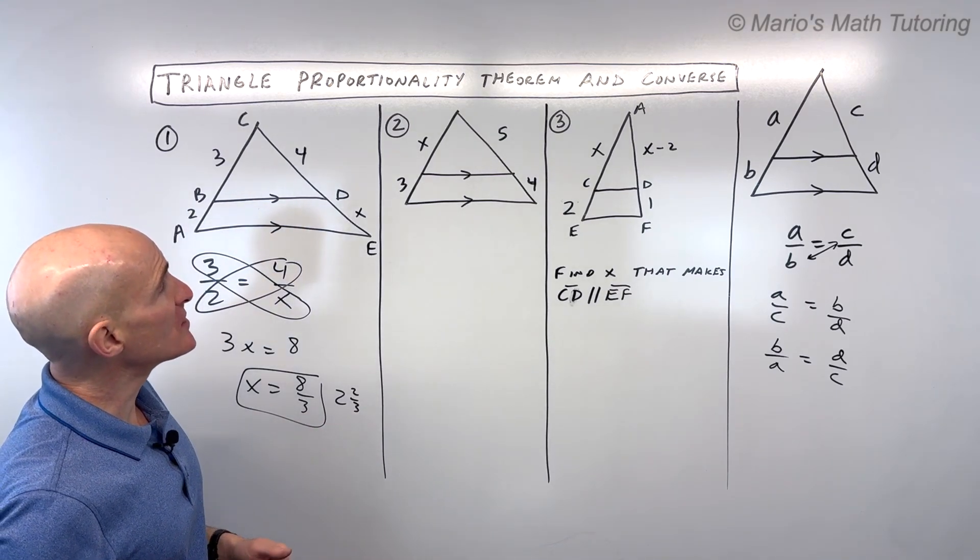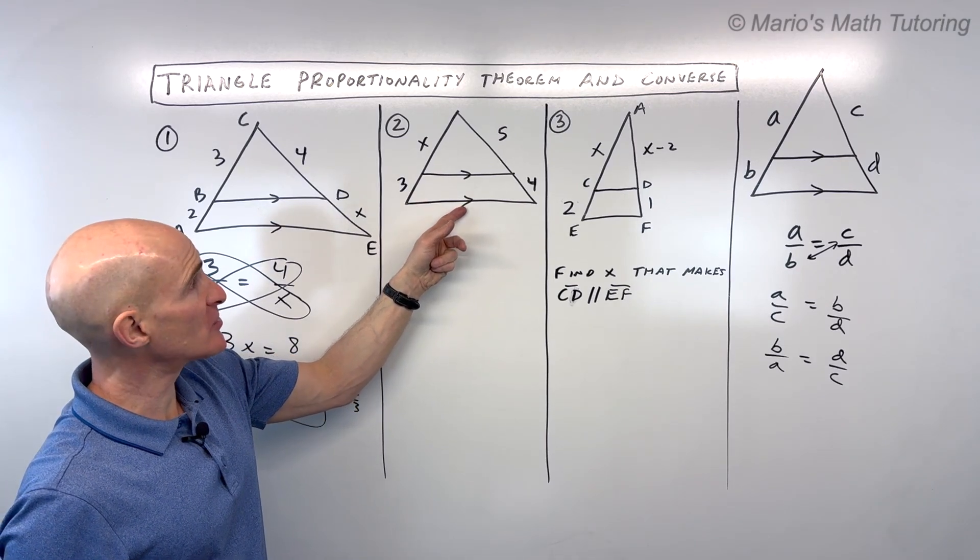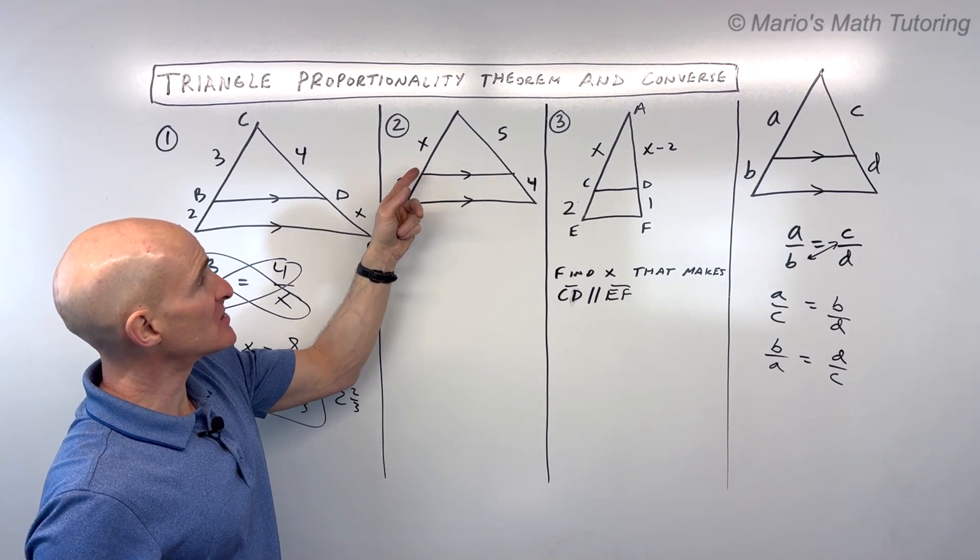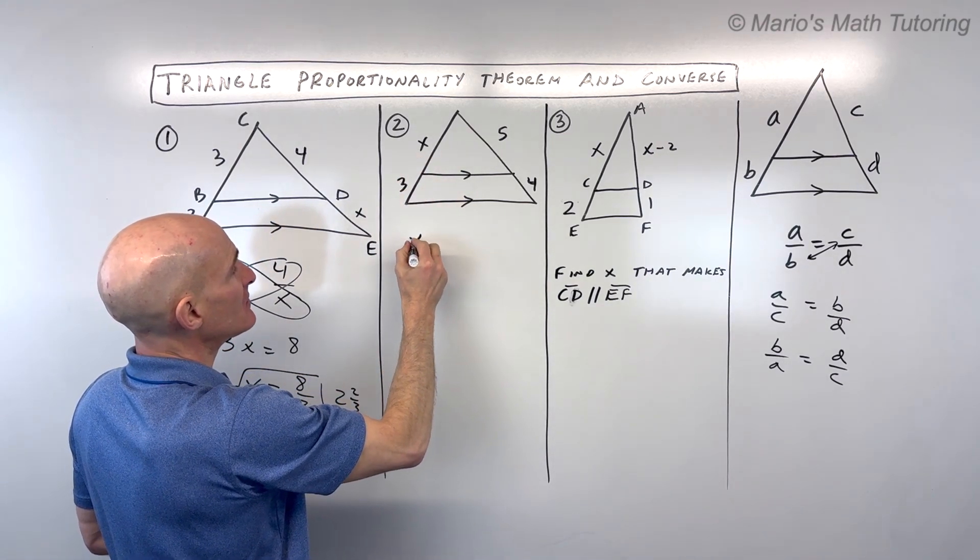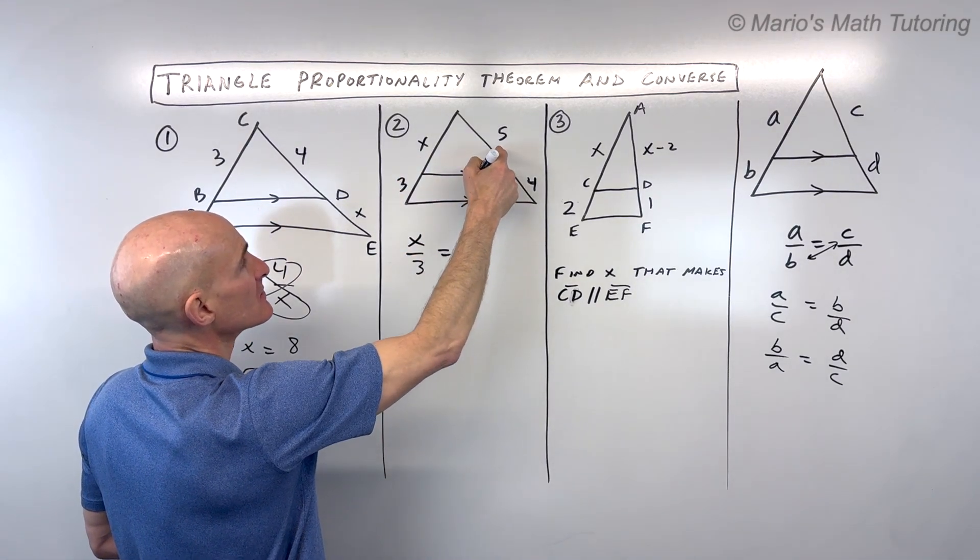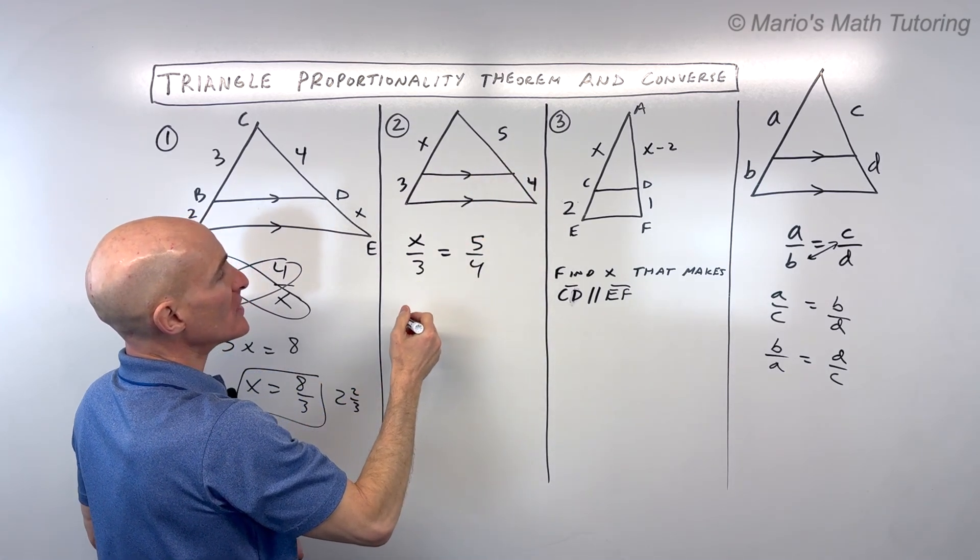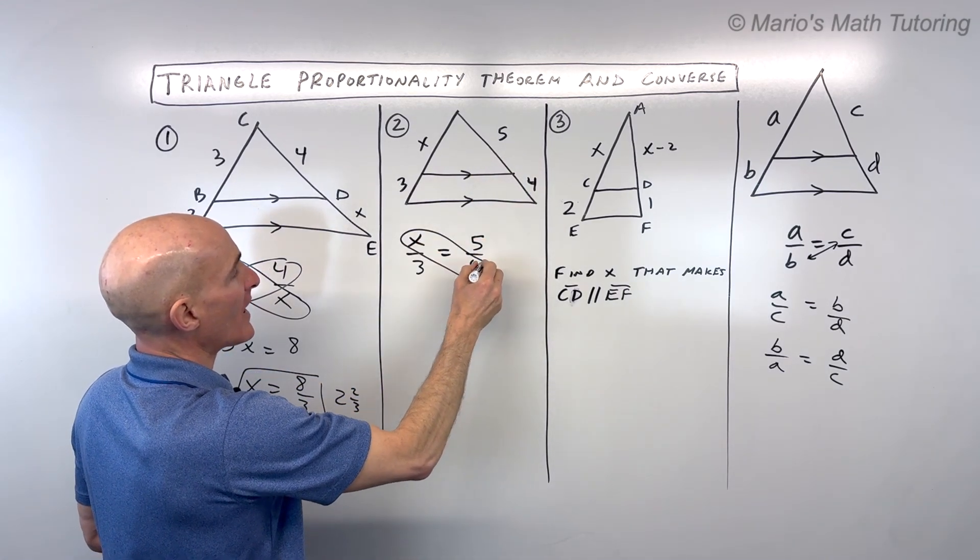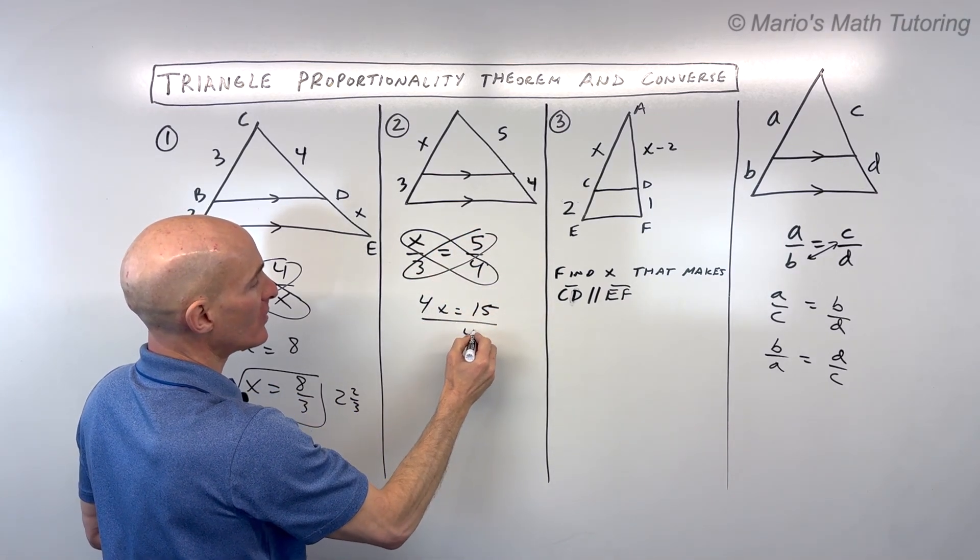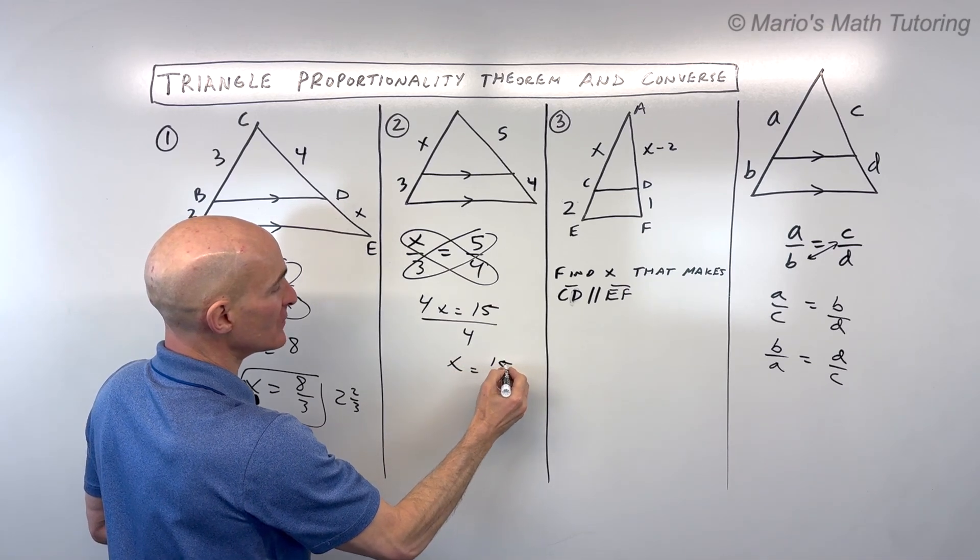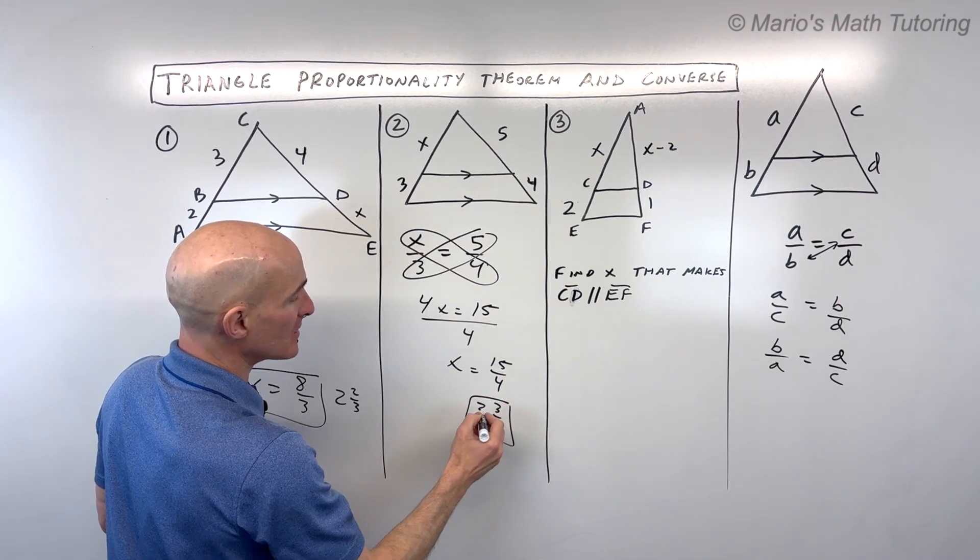For number two, notice that this line segment is parallel to the base of the triangle. It splits up these two sides of the triangle into two segments. We can say a is to b as c is to d. All we have to do is cross multiply, so we get 4x equals 15, divide both sides by 4, and x equals 15 fourths, or 3 and 3 fourths if you write that as a mixed number.